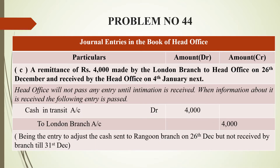The next entry: a remittance of rupees 4,000 made by the London branch to the head office on 26th December and received by the head office on 4th January next year. On 26th December, we debit the cash into the London branch and debit the head office. However, the head office accounts close on 31st December and they did not receive the amount. So until the intimation comes, we hold the entry at head office.